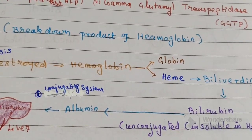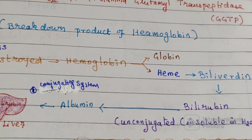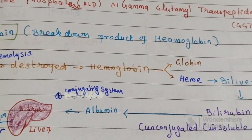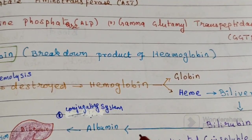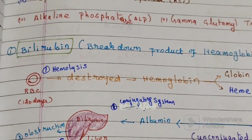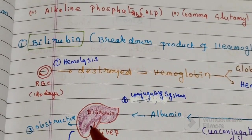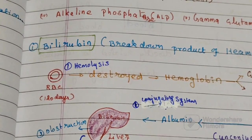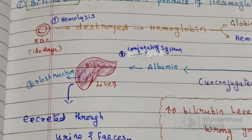This unconjugated bilirubin is also called the indirect form, which is insoluble in water. It binds with albumin and is then transported to the liver. In the liver, bilirubin is converted into the conjugated form, which is water soluble and can be easily excreted through urine and feces.